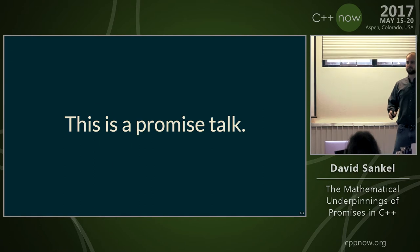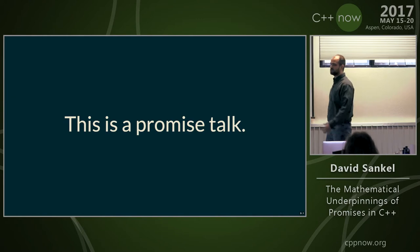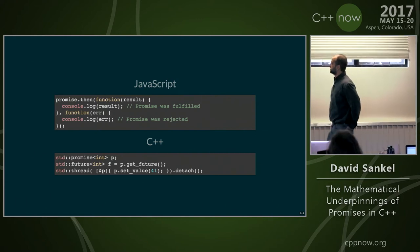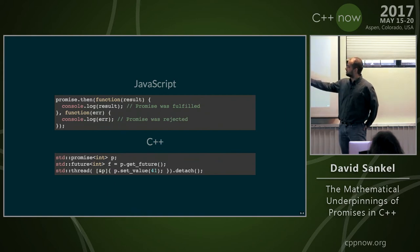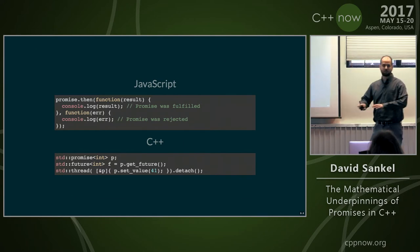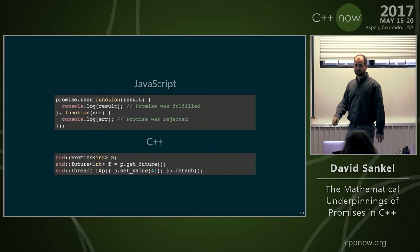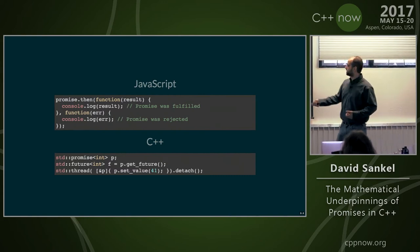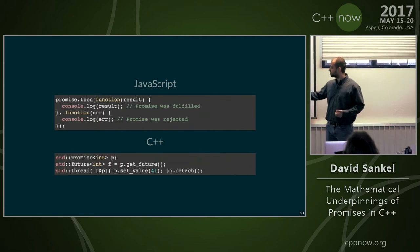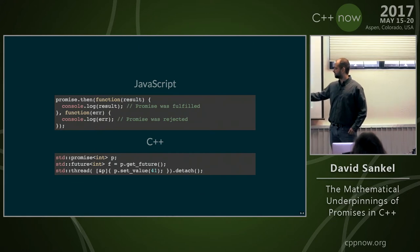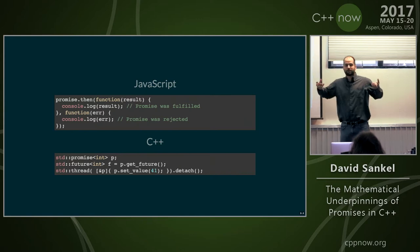This talk is also about promises. How many people are familiar with promises? Great, almost everybody. In JavaScript, you have a promise, you call dot-then, it takes two functions as parameters, and you can pull the value out whenever the promise gets fulfilled — or if rejected, handle the error. In C++, the concept was split into two types: a promise and a future. You create a promise, get the future out of it, spawn a thread to set the value, and the future gets fulfilled.